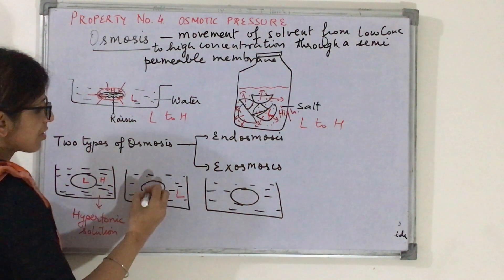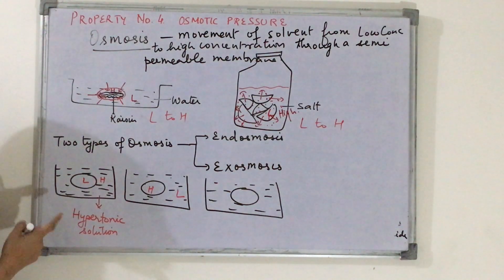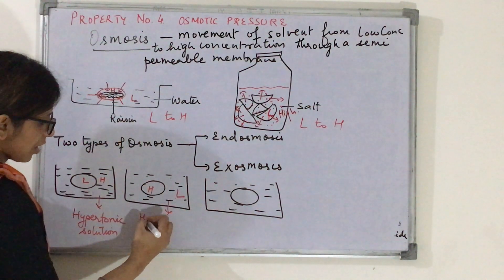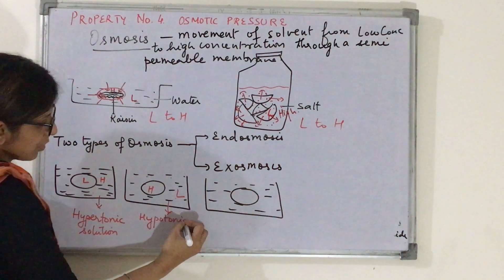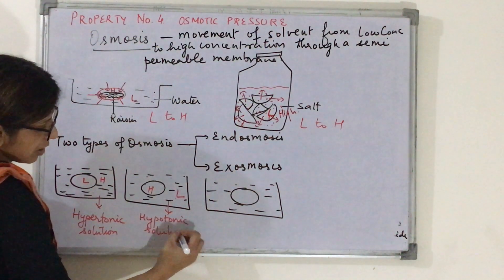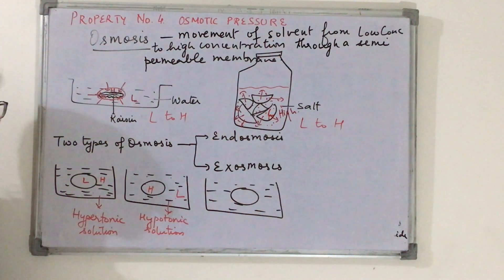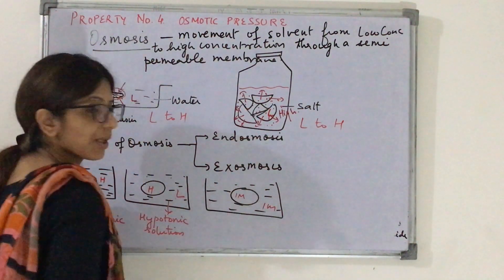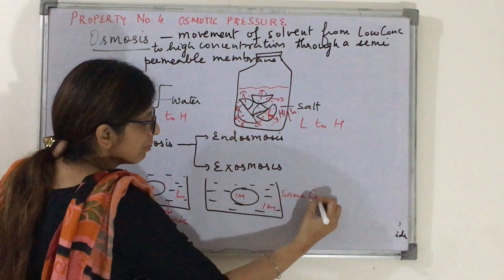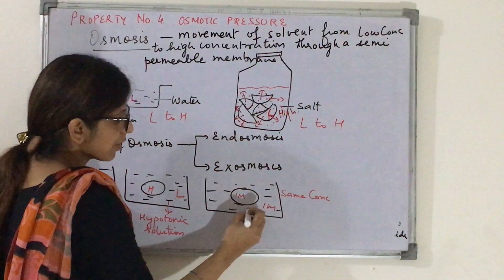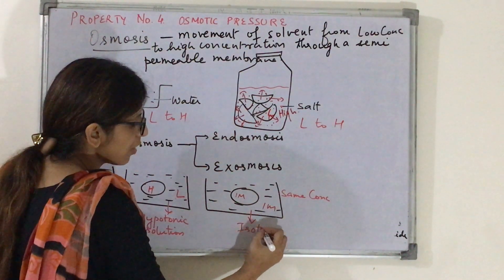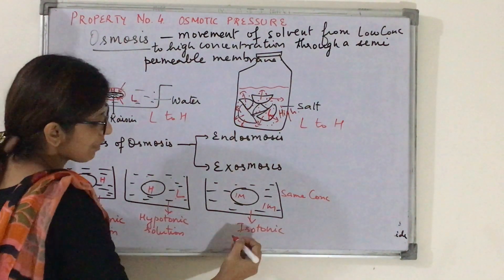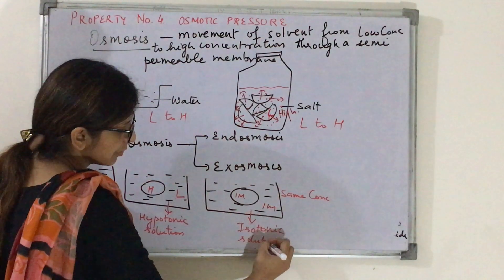If the medium's concentration is low as compared to the cell or the substance being studied, then that kind of medium is known as a hypotonic solution. And if the concentration is the same — for example, both are 1M — then the solution is called an isotonic solution. Iso means same concentration.